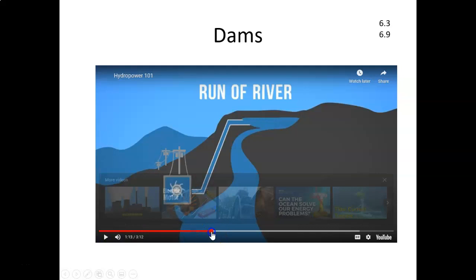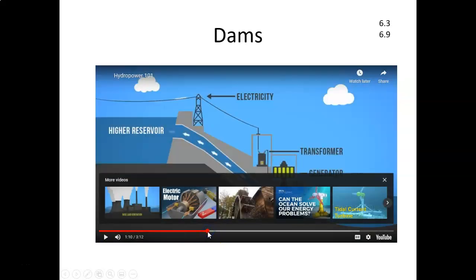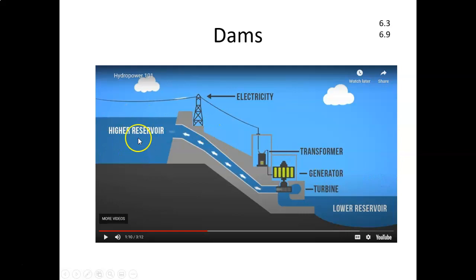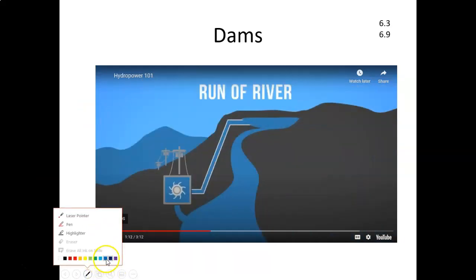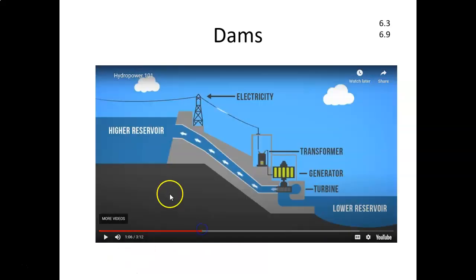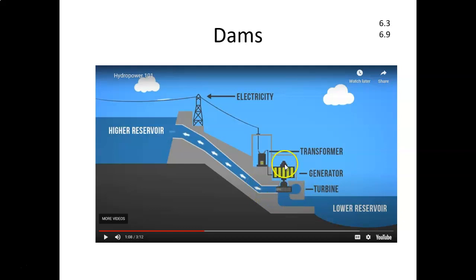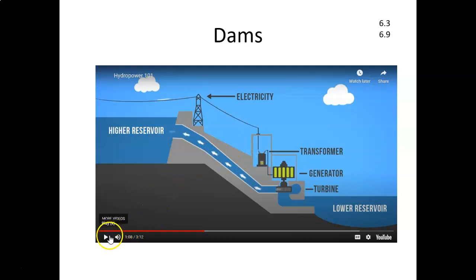One thing to think about with a dam diagram is the different types of energy. When water is stored up high, that's potential energy. As it moves through, that's kinetic energy. When it turns the turbine, that's mechanical energy, converted into electrical energy. At every step along the way, you do lose energy based on the second law of thermodynamics.